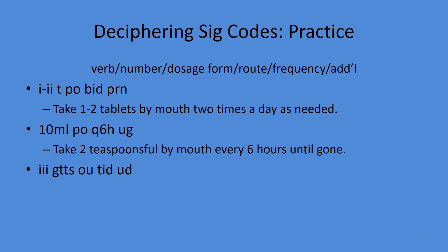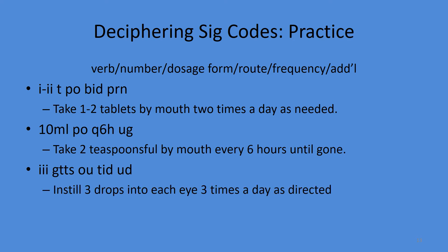Next example: three drops, gtt, TTS, OU, TID, UG, UD. 'OU' means both eyes, so we instill. Translation: instill three drops into each eye three times a day as directed.